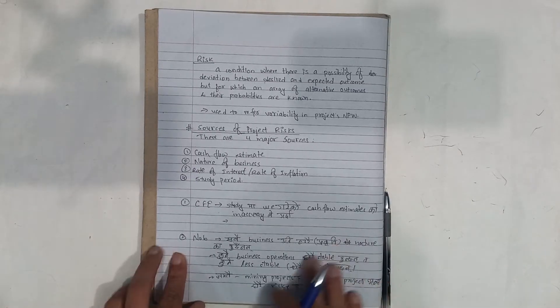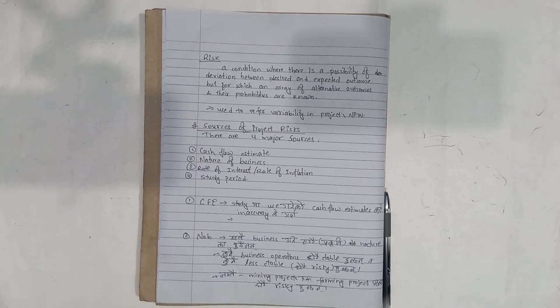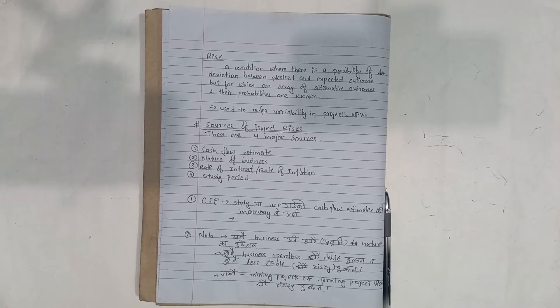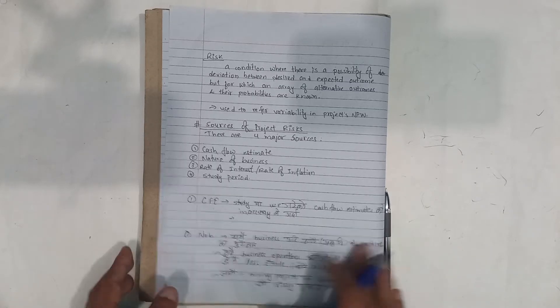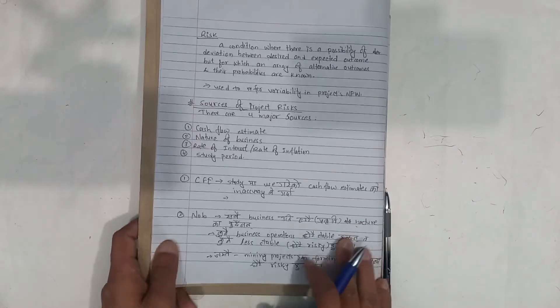The sources of project risk — there are four major sources: cash flow estimates, nature of business, rate of interest, rate of inflation, and study period.